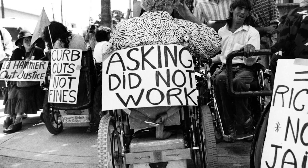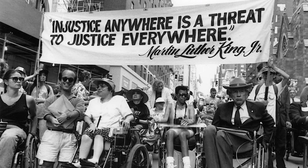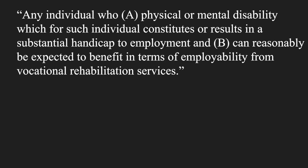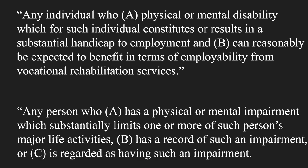The first of these was the Rehabilitation Act of 1973. Though Nixon had vetoed the bill previously, he did eventually sign it. The bill barred employment discrimination from the federal government, prohibited discrimination from any program receiving federal funding, and redefined what a handicapped individual was — changing it from "a physical or mental disability which results in a substantial handicap to employment and can reasonably be expected to benefit in terms of employability from vocational rehabilitation services," to "a physical or mental impairment which substantially limits one or more of such person's major life activities, has a record of such impairment, or is regarded as having such an impairment."